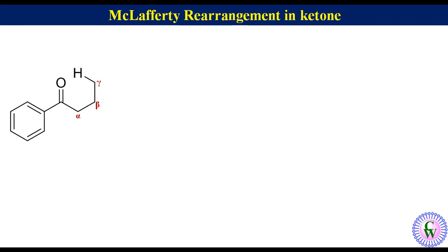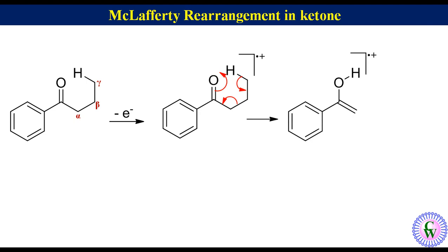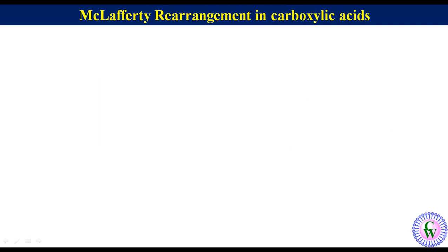1-phenylbutanone. As we can see, it also has gamma hydrogen. Removal of one electron will give a radical cation which undergoes McLafferty fragmentation to produce an enolic radical cation and ethylene gas. The m/z value of the McLafferty fragment will be 120.